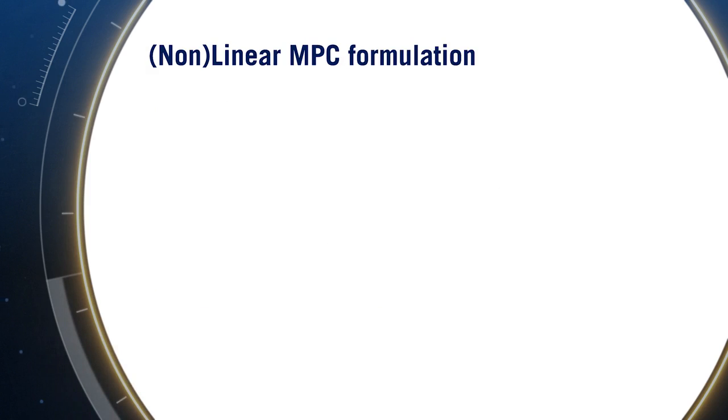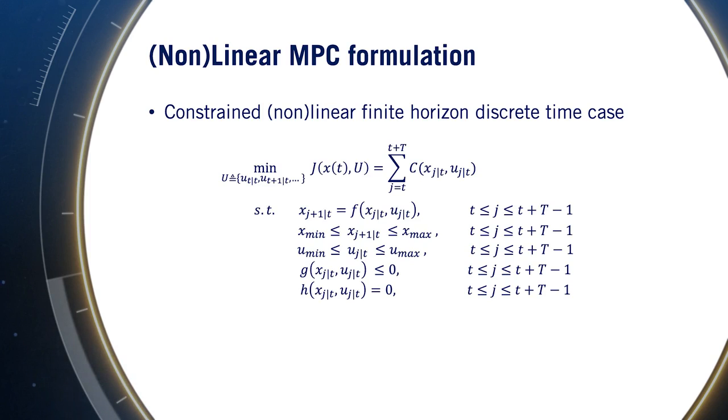In the more general case, the objective function is any differentiable nonlinear function of state and inputs over the receding horizon. The constraints imposed on the optimization can include nonlinear dynamic models of motion, state and input bounds that capture things like maximum steering angles, and any other inequality constraints G or equality constraints H that affect our system.